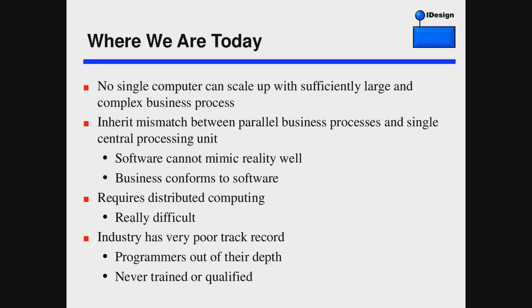No single computer can ever scale up with sufficiently large and complex business processes. As the business gets more invoices, more people, more transactions, more traffic, it simply doesn't work on one computer. There's an inherent mismatch between parallel business processes — people working in parallel across teams and divisions — while we have a single computer trying to catch up in a Turing machine way. The software can't mimic reality because it funnels everything to a single computer doing things sequentially, trying to mimic a fundamentally parallel process. What we see today is the business conforming to the software, which is completely distorted. The software should conform to the business, never the other way around.